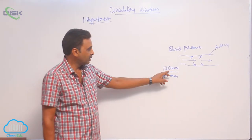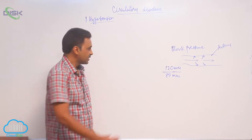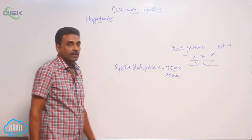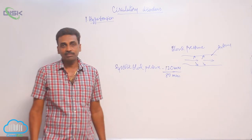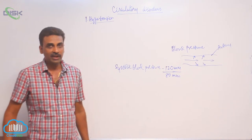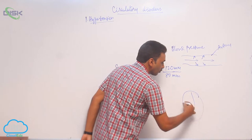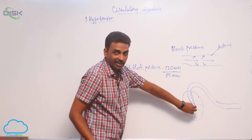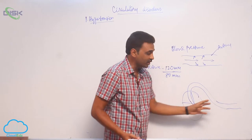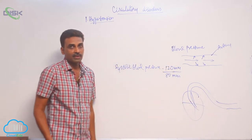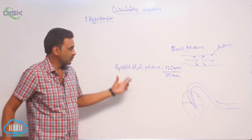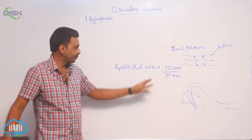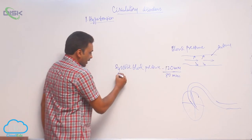The 120 millimeters of mercury is called systolic blood pressure. Systolic refers to contraction — when the heart undergoes contraction, blood flows through the arteries and exerts pressure at that time. The blood pressure measured on the walls of the arteries at the time of systole of the heart is around 120 millimeters of mercury.